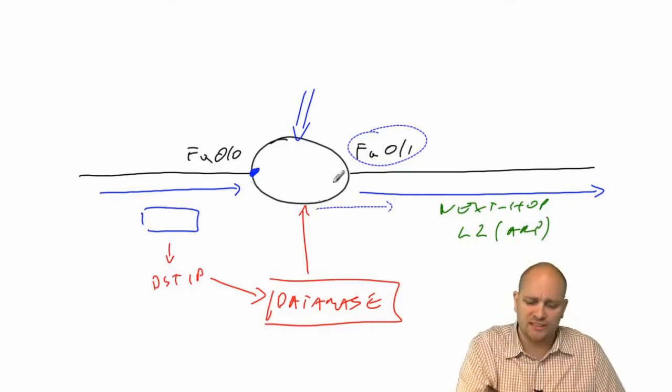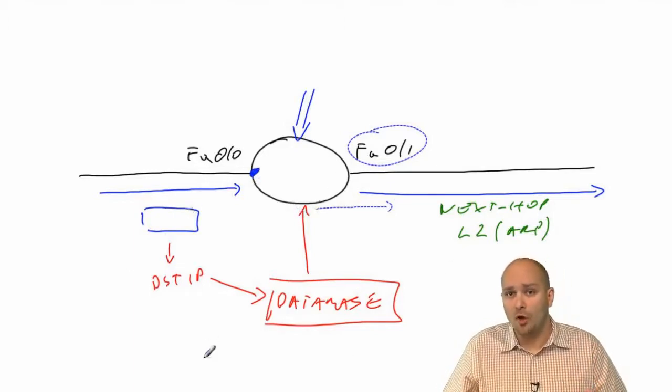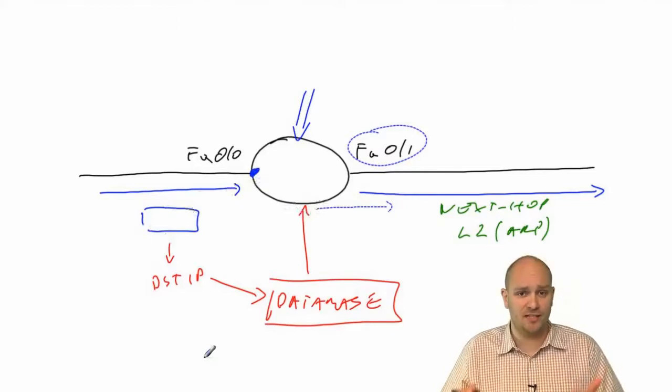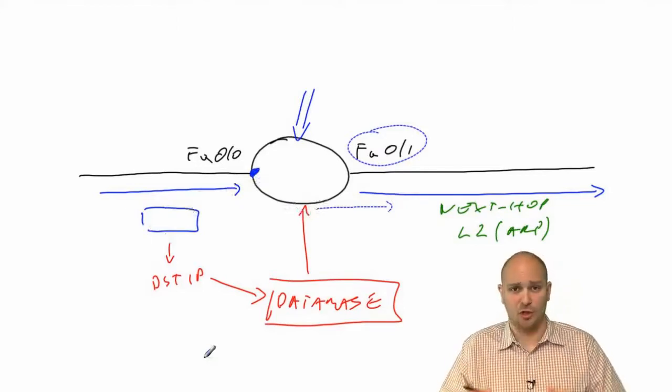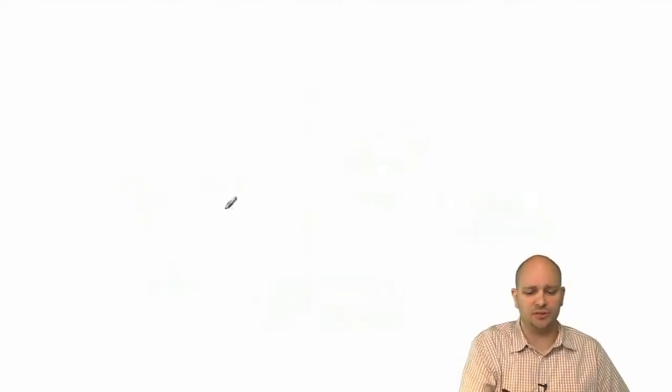On Ethernet, the layer 2 address is most likely determined using the ARP table or ARP protocol. All these processes need to happen for pretty much every single packet that goes through. In traditional IP routing, this process was relatively slow — or rather, very inefficient.